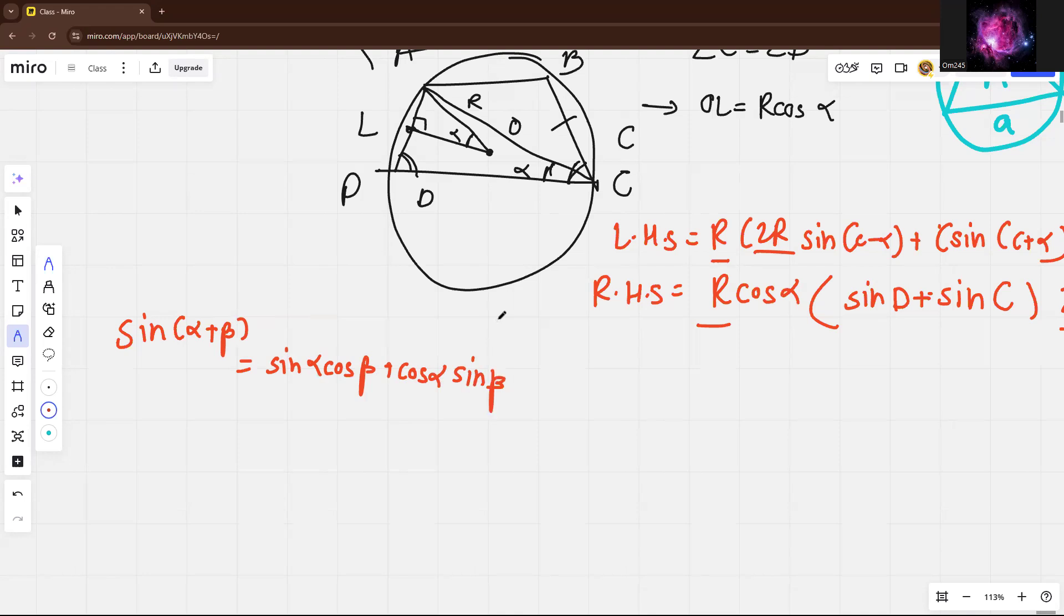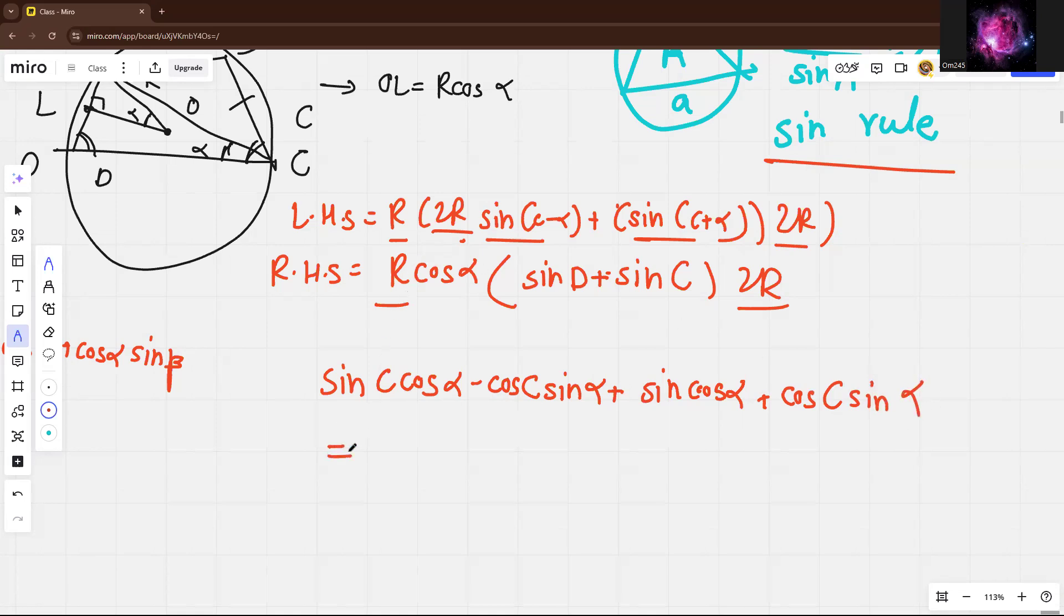So if you use this formula here on both sides, you will get sine C cos alpha minus cos C sin alpha, plus sine C cos alpha, cos C here, and cos C sin alpha. And the right hand side should be equal to cos alpha sin D, which is actually sin C.